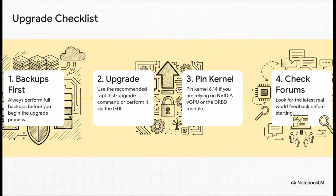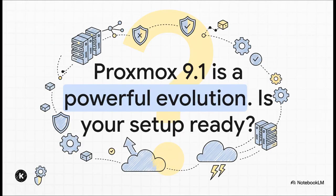Think of this as your pre-flight checklist. Step 1, and I can't say this enough: full backups — always. Step 2: go ahead and run the upgrade itself. Step 3, and this is crucial: if you use NVIDIA vGPU or DRBD, you have to pin your kernel back to 6.14. And finally, step 4: before you do anything, go check the official forums and see what other people are experiencing in the real world. There's no doubt that Proxmox 9.1 is a powerful step forward — new standards, a ton of convenience, and modern features. But with those kernel risks, it's not a blind jump. It requires a little bit of planning. So the real question is: after hearing all this, is your setup ready for the leap?